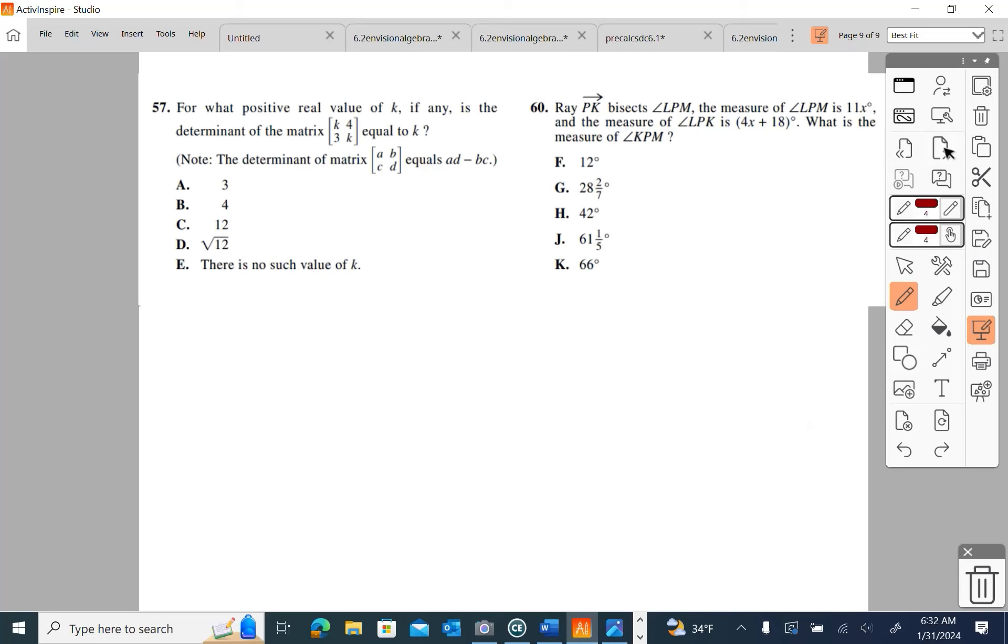Oddly enough, these are on order. Here's 57. For what positive real value of K, if any, is the determinant of the matrix that contains the elements K, 4, 3, K equal to K? And note, the determinant of the matrix that contains the elements A, B, C, D is equal to AD minus BC. So, even those of you who are taught how to read with hooked-on phonics have everything you need. Let's do a lineup process. K is A, so K. So, let's multiply it by D, which is going to be a K. K times K minus three times four. And it must equal K. So, there's your setup. K times K minus three times four must equal K.